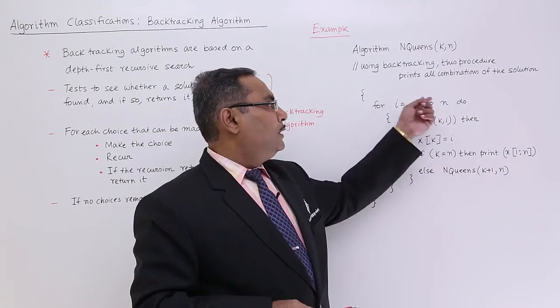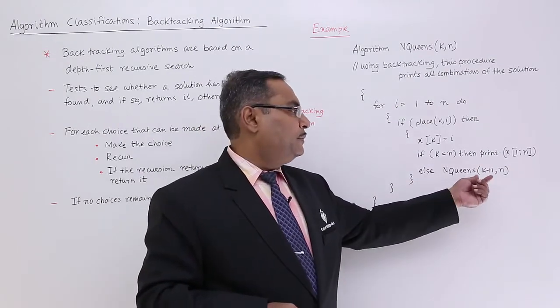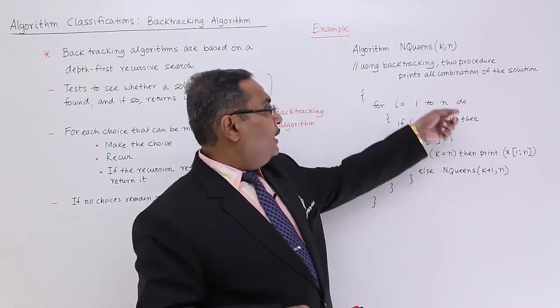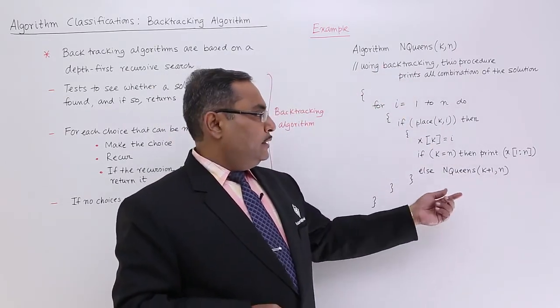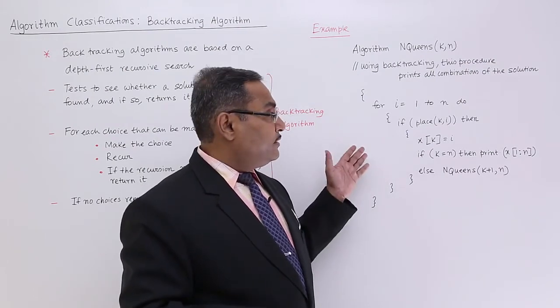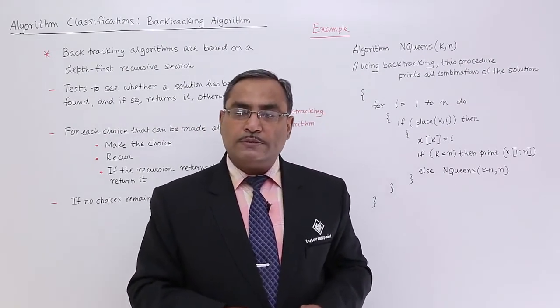Else, I shall go for the placement of the k plus 1 Queen out of n number of Queens, and I will be calling this one in a recursive way. This recursion has been put under this iteration, and it is a very good example of backtracking problems.